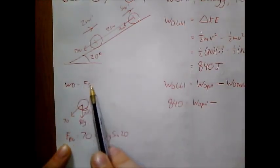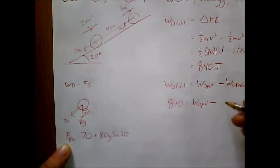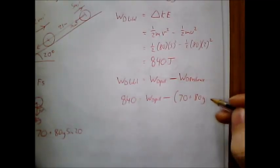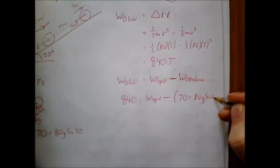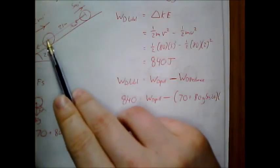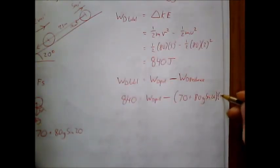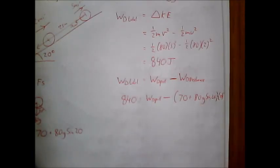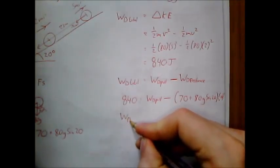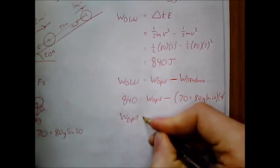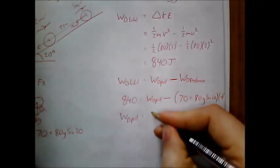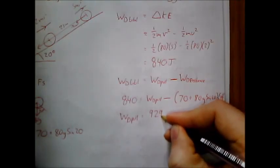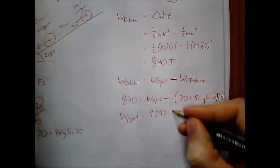So the work done is a force times the distance. So we need to subtract 70 plus 80g sine 20, all multiplied by the distance, 25 meters. There's one unknown here. So doing some rearranging, you eventually come to the work done of the pulling force to be 9,293.59 joules.